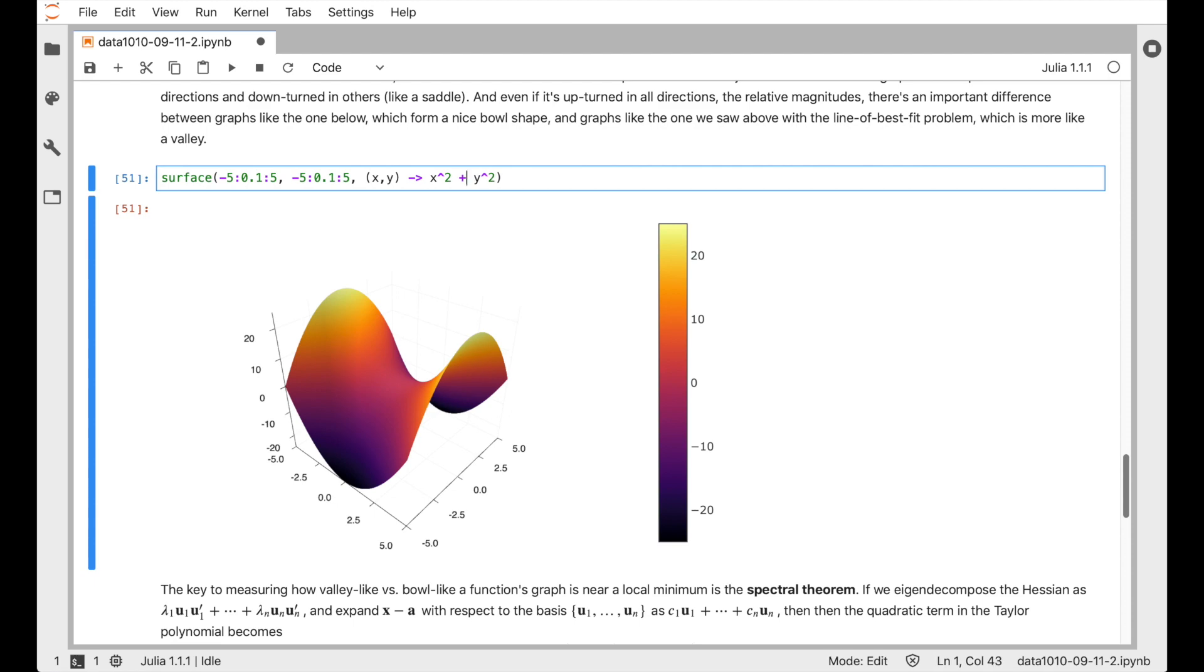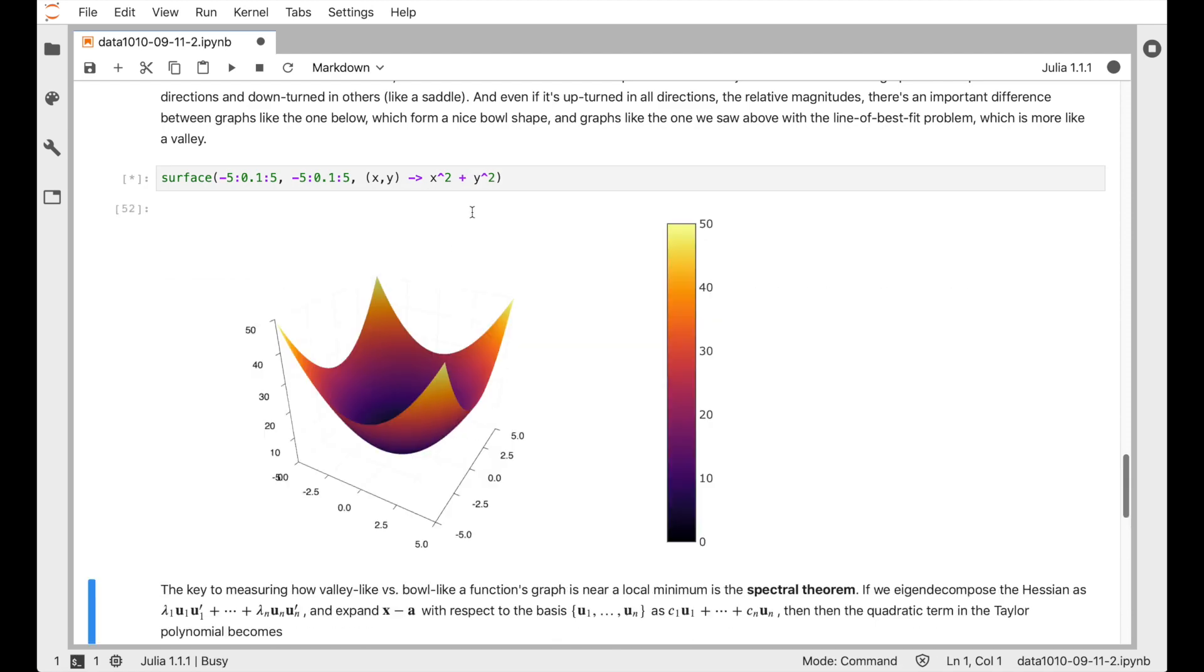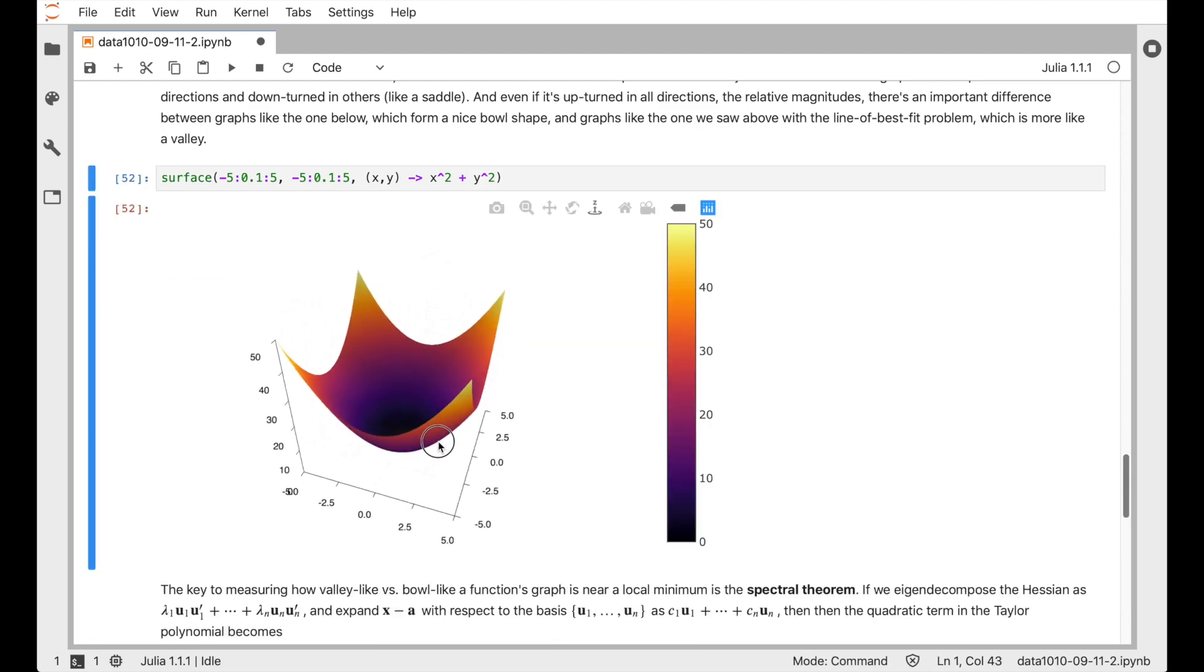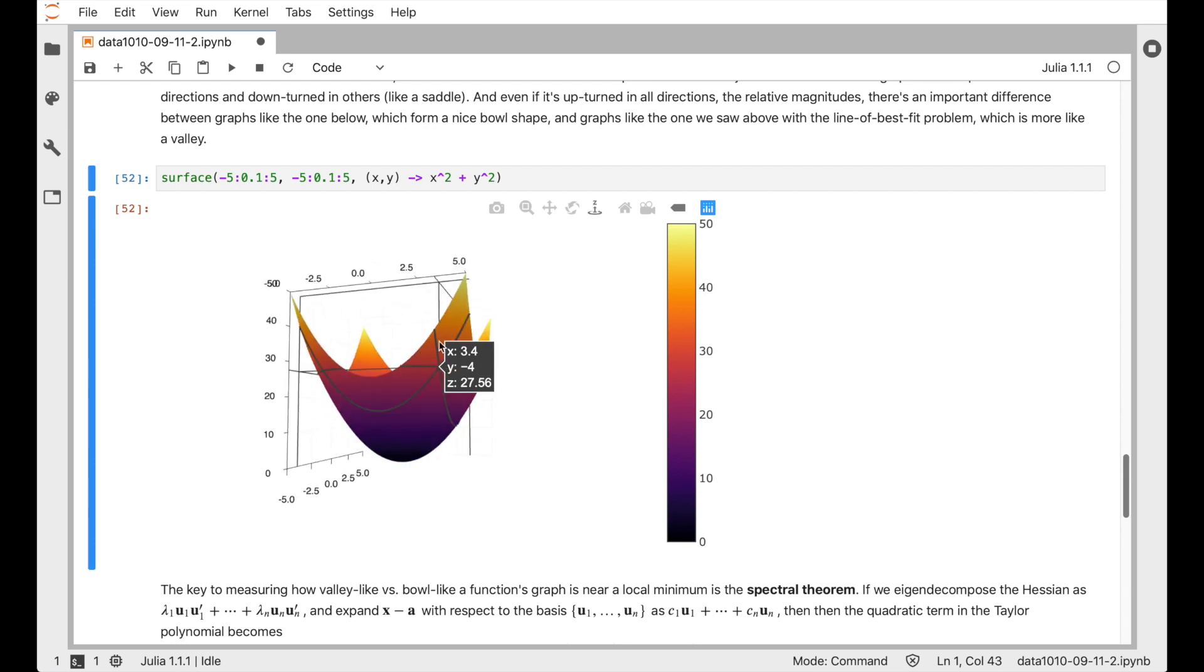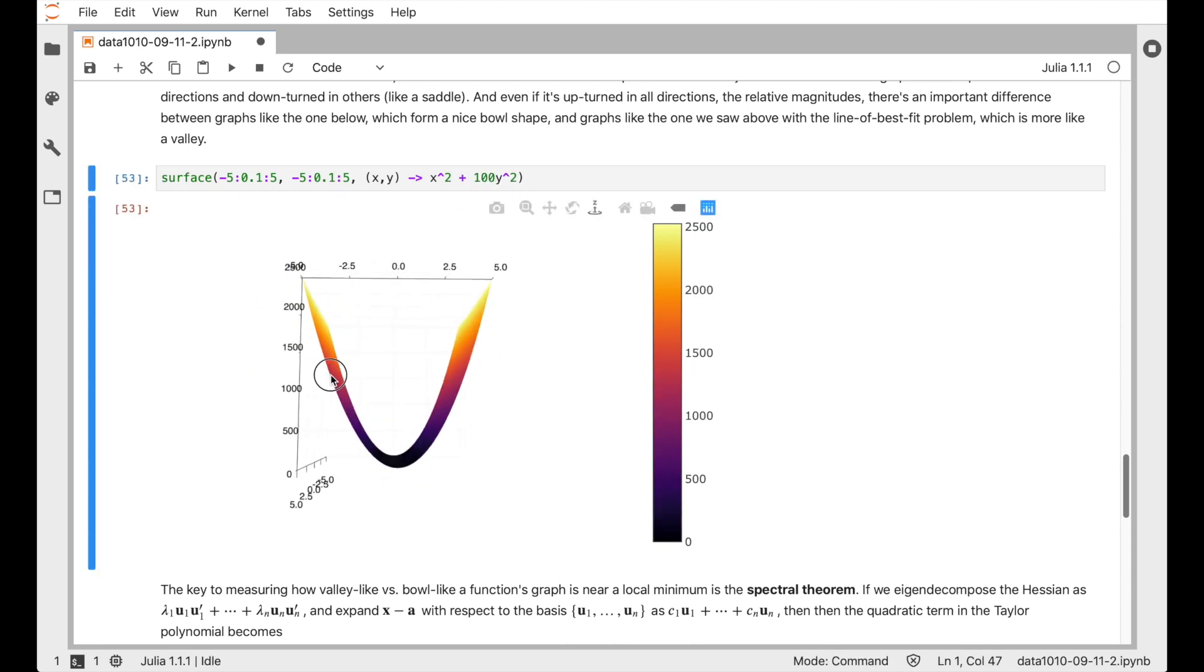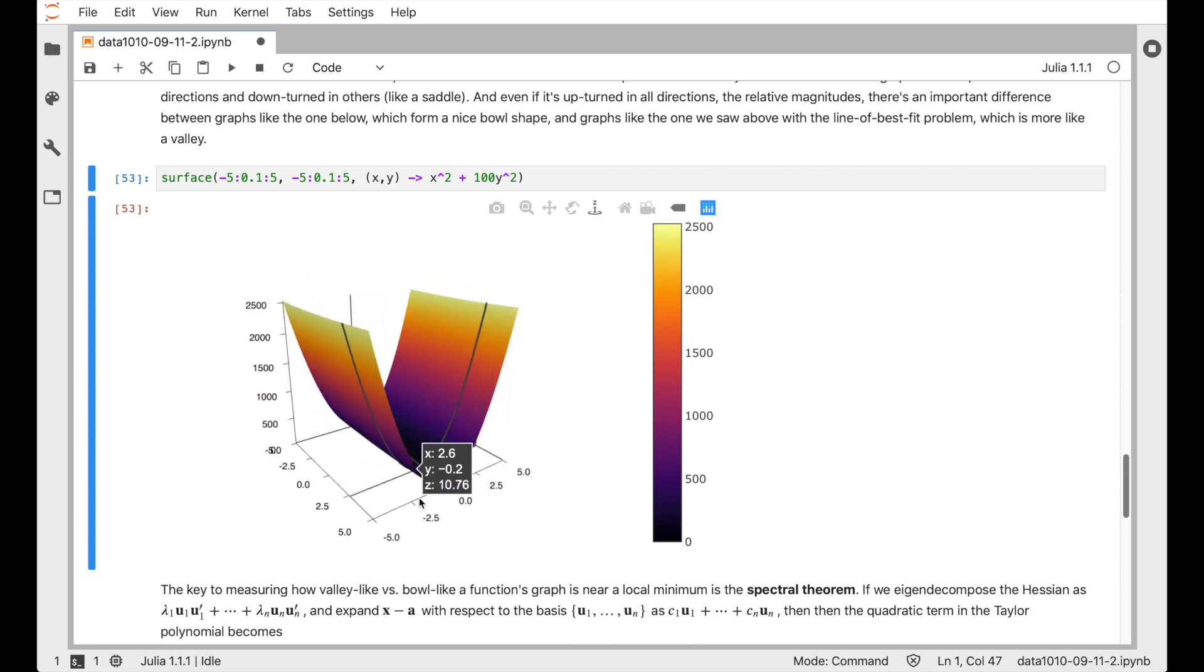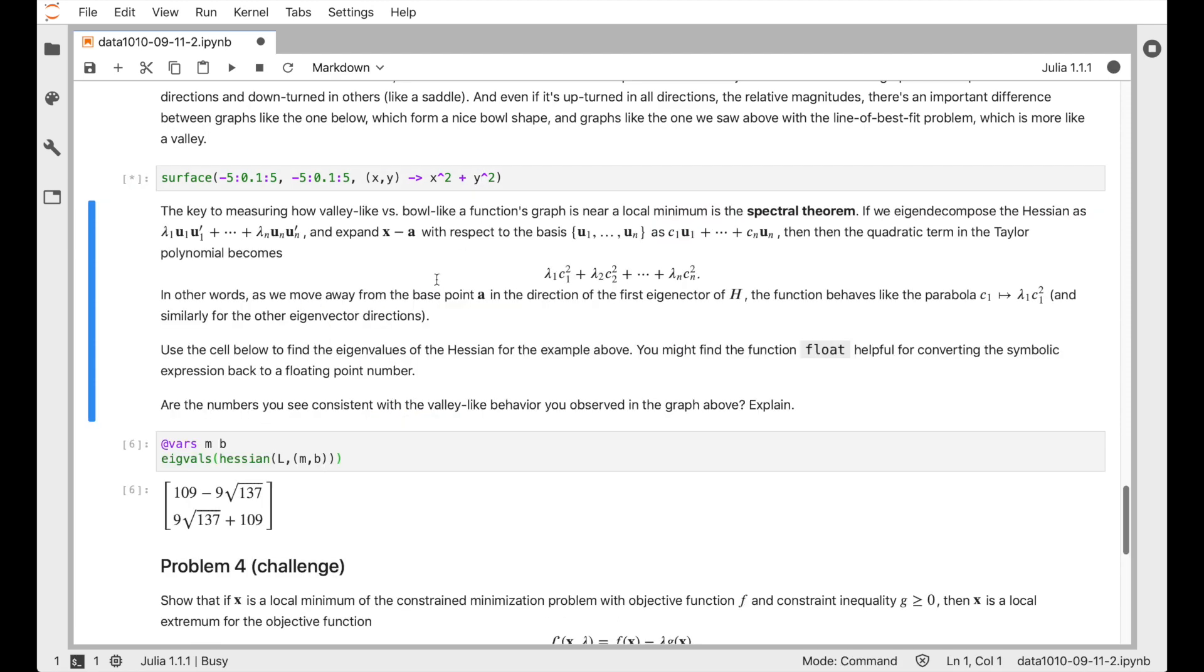So this question of determining whether you have a saddle point and also if you have a bowl shape, whether it's something that's really more like a bowl like this or something that's more valley shaped like what we saw above, you really want to be able to detect that behavior. It's going to end up being pretty important for optimization in higher dimensions because different optimization algorithms are going to have different behavior depending on whether the local minimum that they're trying to converge to is something like this versus something more like the bowl shape like that.